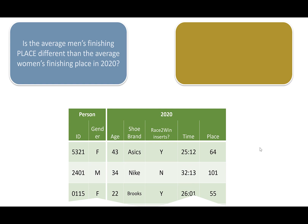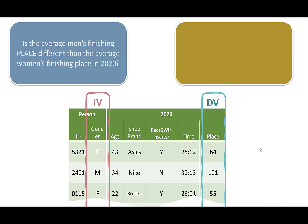New question: is the average men's finishing place different than the average women's finishing place in 2020? Independent variable is gender. Now our dependent variable is finishing place. The key difference between finishing time and finishing place is that place — first, second, third, fourth, fifth, sixth — is an ordinal scale, not an interval scale. So we're back to using Mann-Whitney, the same test we'd use if time were our dependent variable and the distributions weren't normally distributed.